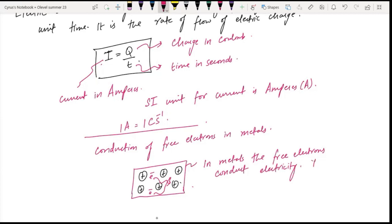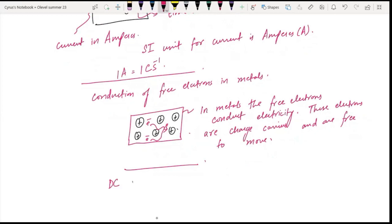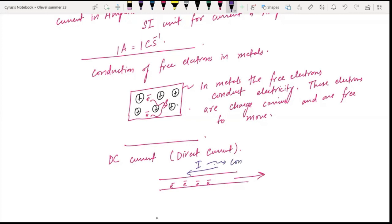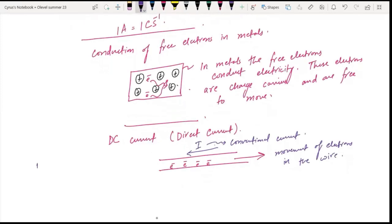These electrons are charge carriers and are free to move. In direct current, the current flows in one direction only.